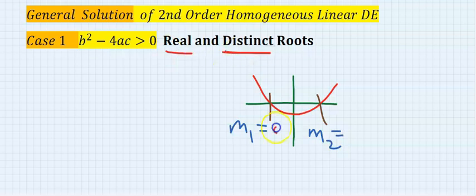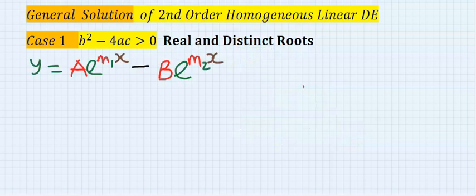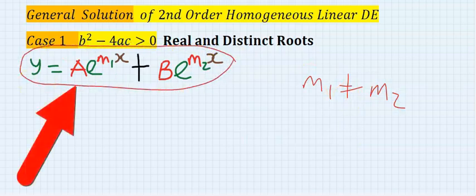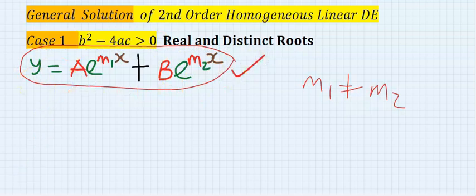Distinct means they are different. When your m1 is not equal to your m2, then your general solution becomes this. Your final answer must be in this form.